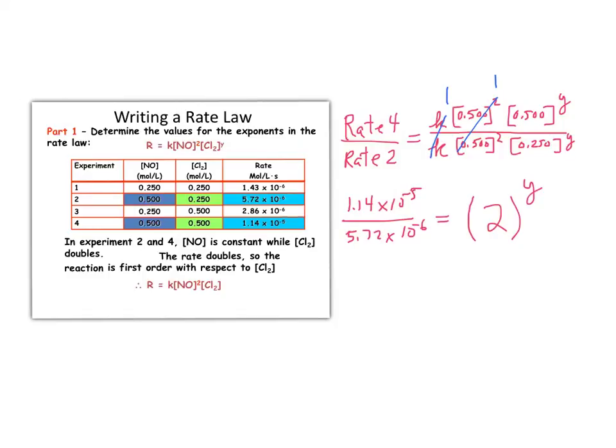And notice in this case, when we simplify the rates, we get 2, so 2 equals 2 to the y, therefore y must equal 1.